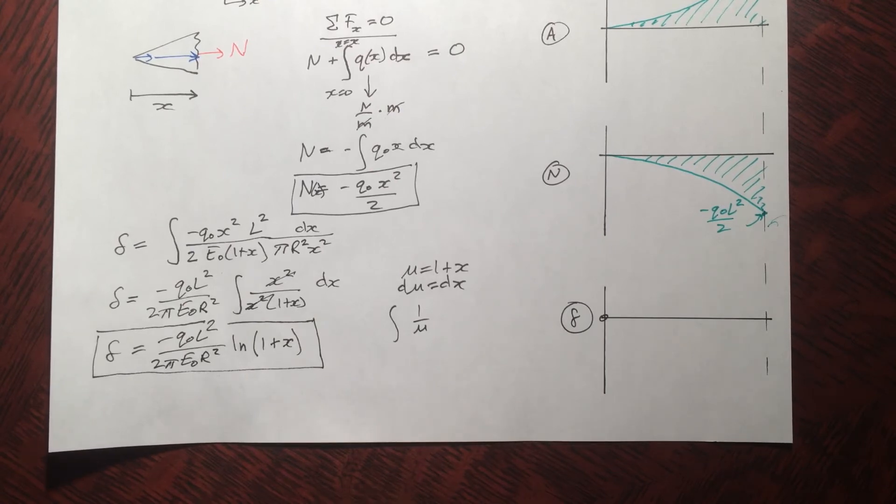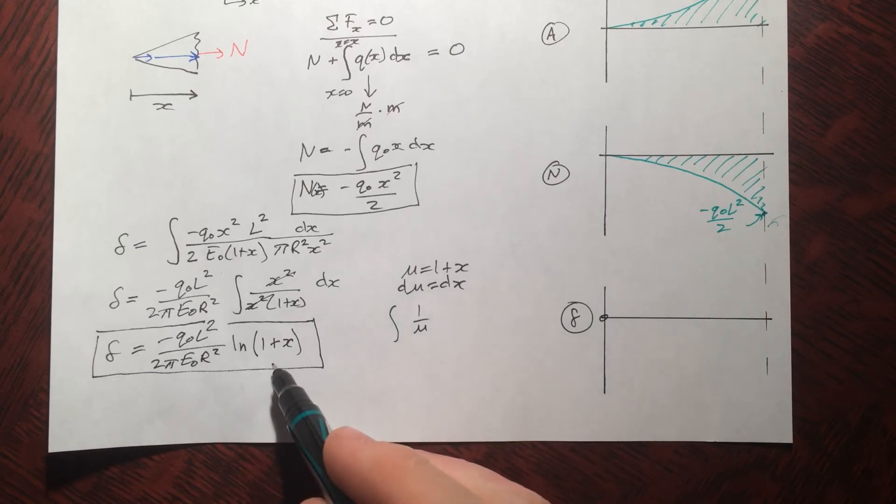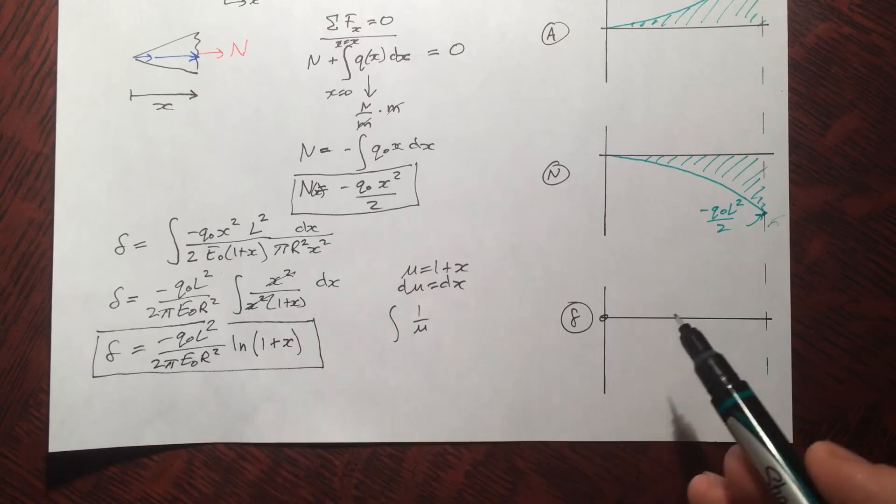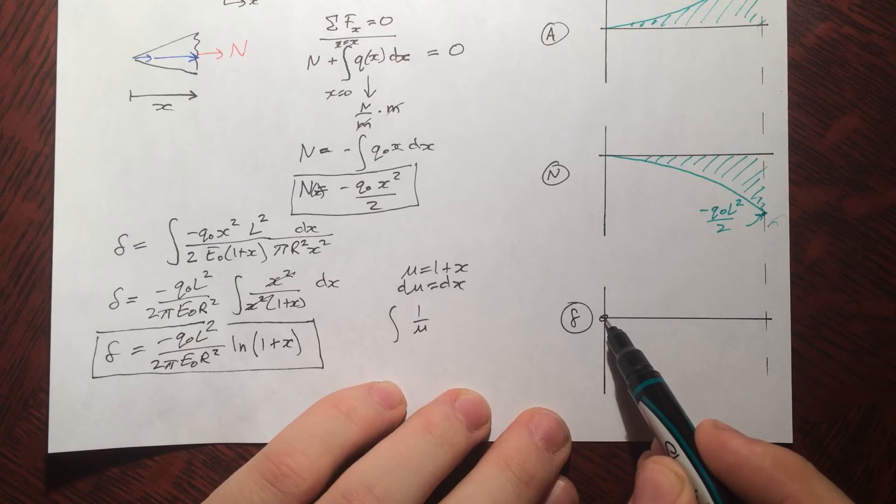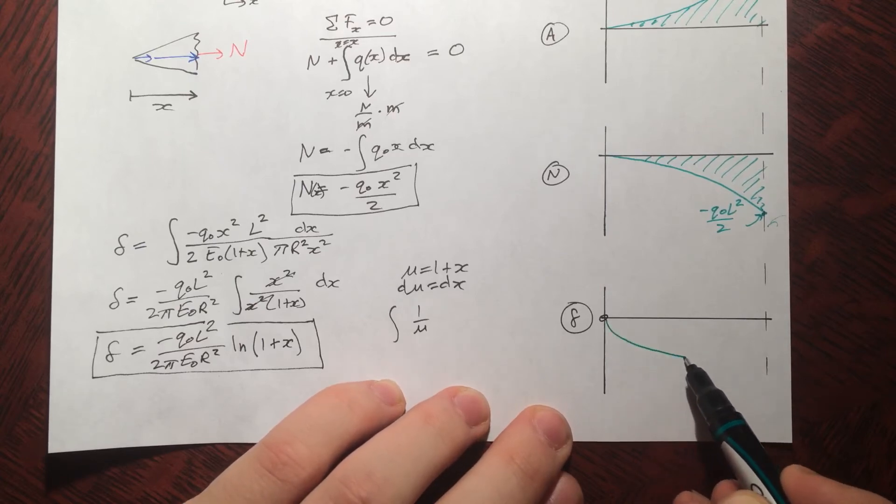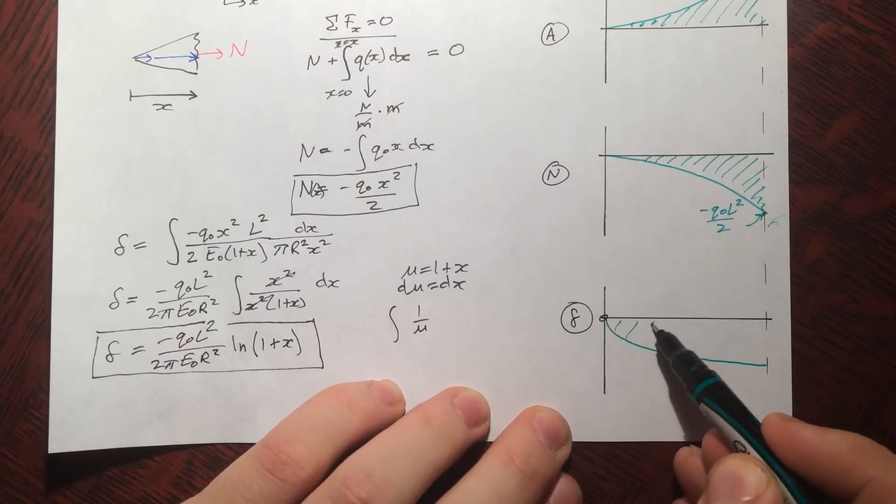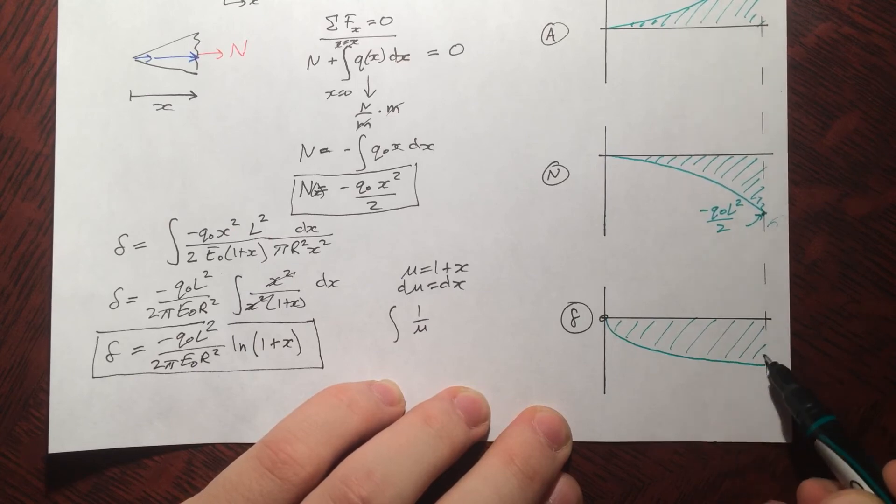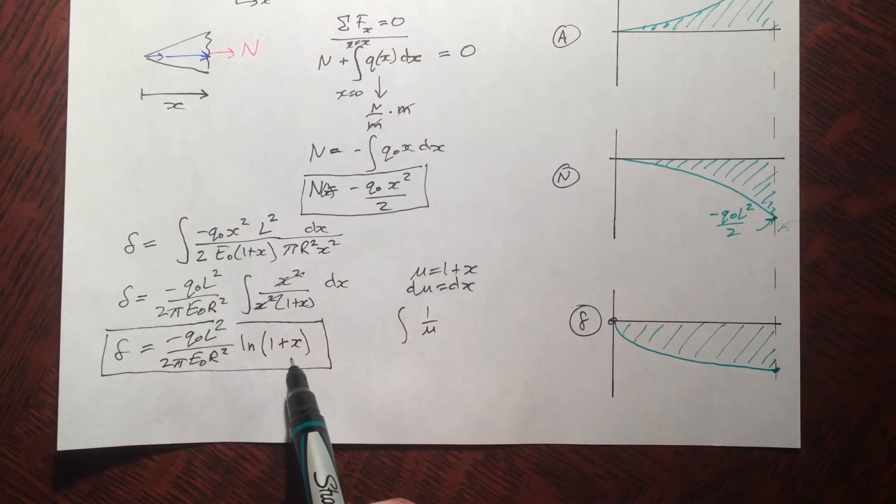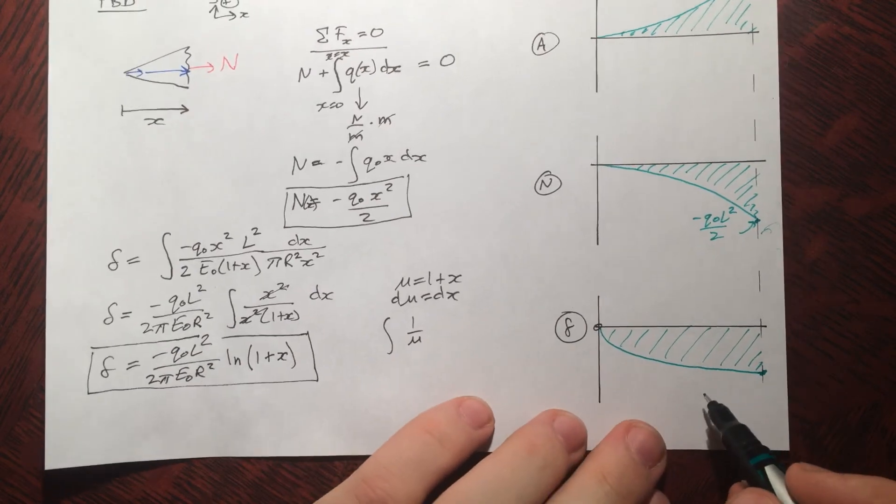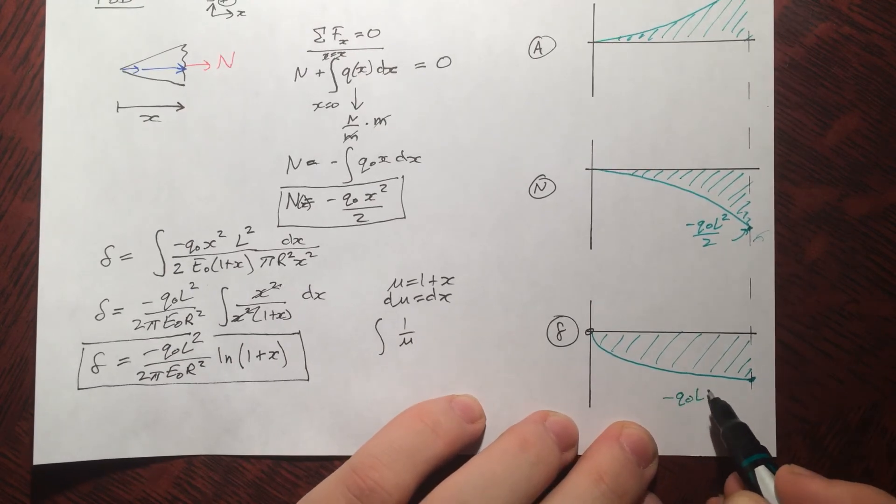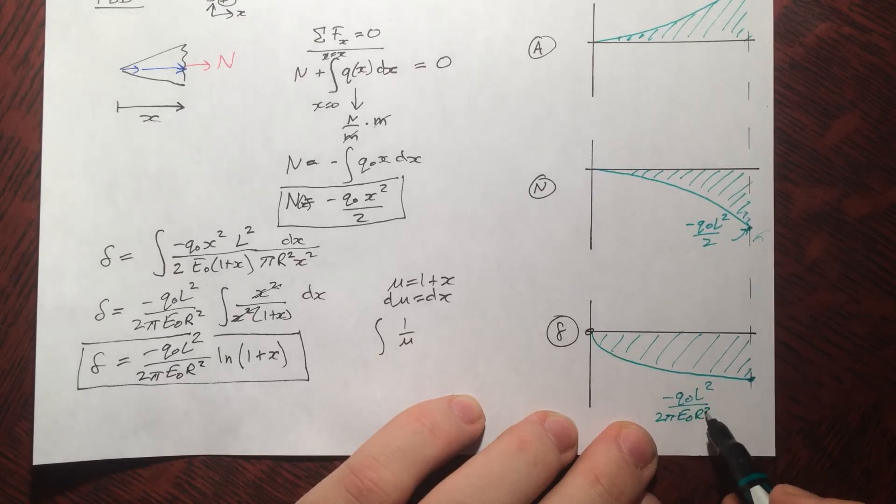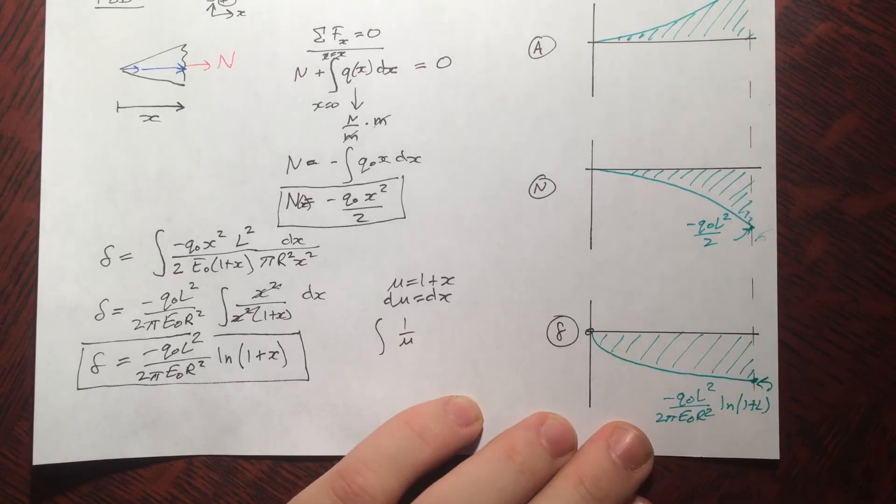Cool. So ln negative. So that's going to be going like this. Boom. There we go. Kind of a funny looking function. And this value here, well that's just going to be our integral evaluated at x equals L. Negative Q naught L squared over two pi E naught R squared ln one plus L.